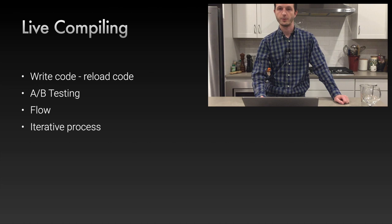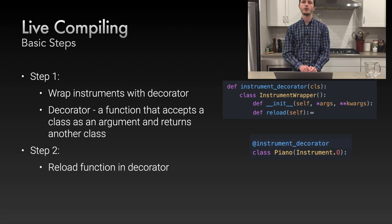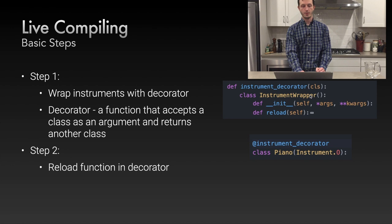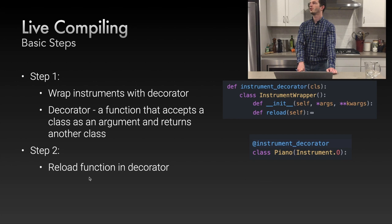The two steps for live compiling. Step one: wrap objects you want to compile using a decorator. A decorator is a Python-specific function that accepts a class as an argument and returns a modified or different class. Here we use an instrument decorator — it accepts a class, creates a wrapper object, initializes the object, and returns the wrapper. To use it, add @instrument_decorator to the top of the Piano class, and every time you use Piano it'll be wrapped in that object.